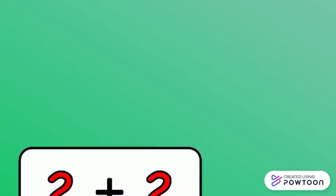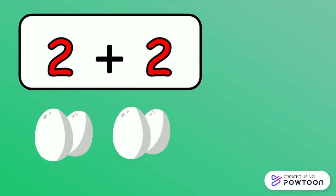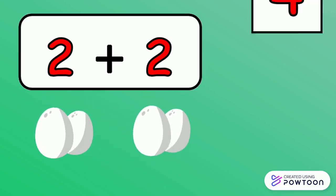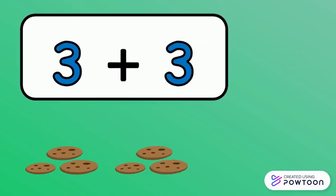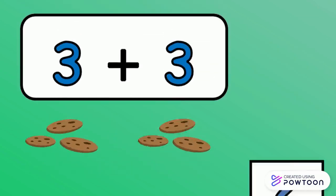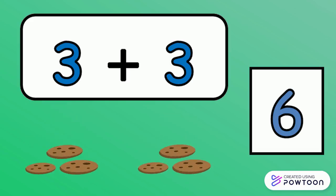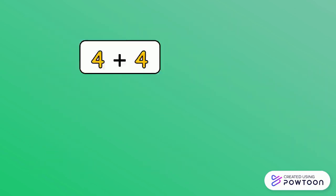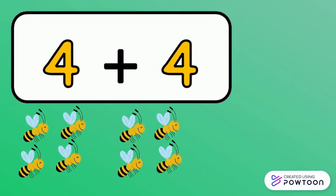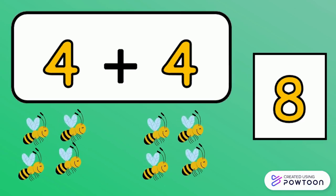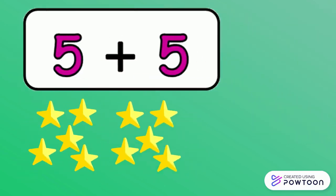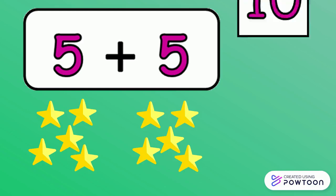The doubles of 2 is 4. 2 plus 2 equals 4. The doubles of 3 is 6. 3 plus 3 equals 6. The doubles of 4 is 8. 4 plus 4 equals 8. The doubles of 5 is 10. 5 plus 5 equals 10.